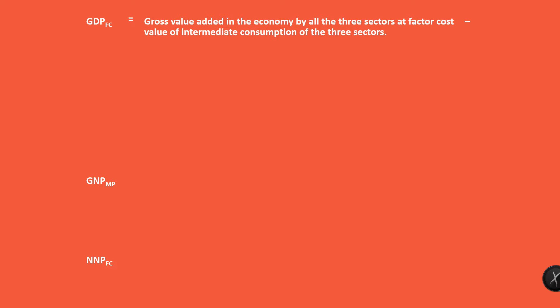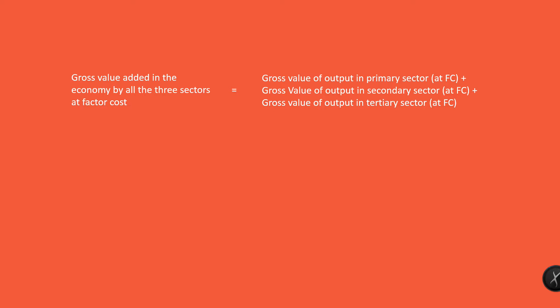From the given data set, we can straightaway calculate gross domestic product at factor cost. GDP at factor cost equals gross value added in the economy by all three sectors at factor cost minus value of intermediate consumption. Gross value added: 950 plus 470 plus 500 equals 1,920 crores.